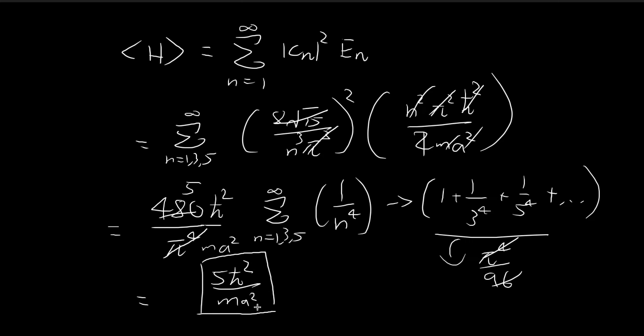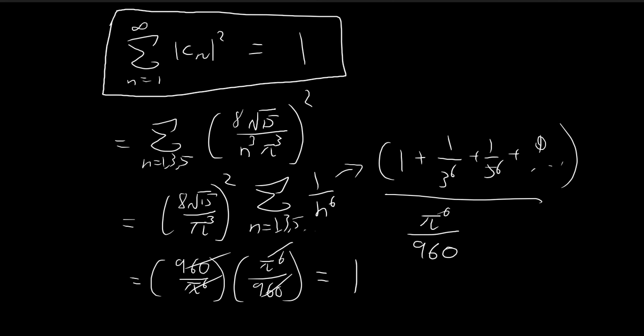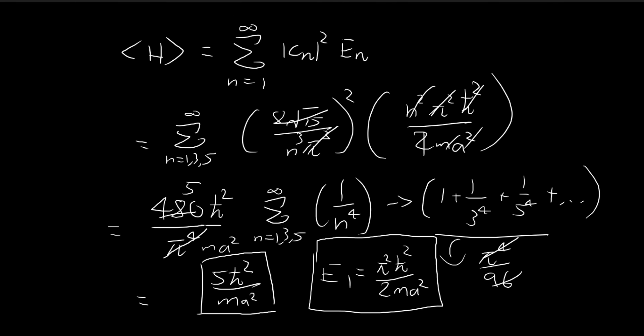You see that this expression is actually really similar to E1. If you substitute 1 over here, this equals π²ℏ²/(2ma²). If you take π² and divide it by 2, you see it's actually very close to 5. So the first energy state value is actually really close to the expected value, which is perfectly valid because we found that the probability of getting the first energy state is very large. You can expect that the expected value is going to be very close to the first energy state.